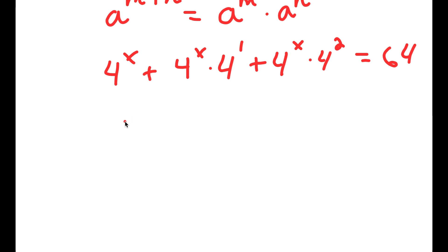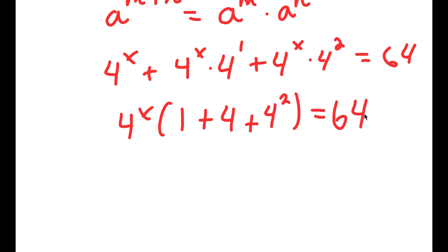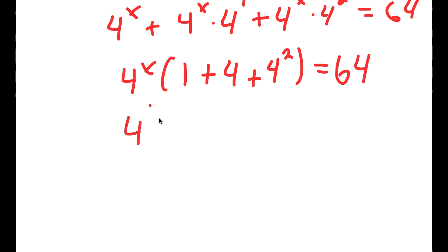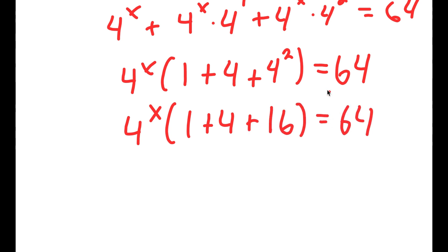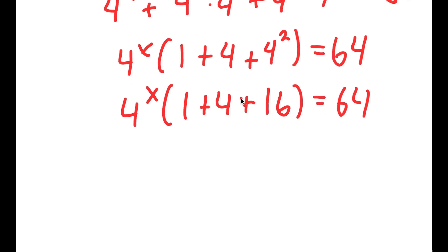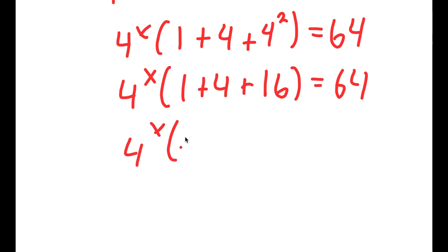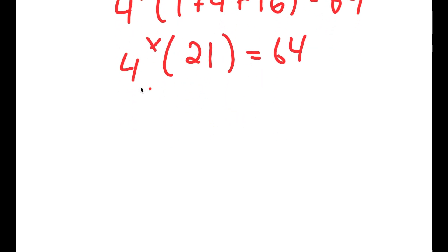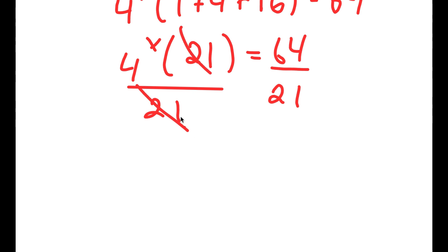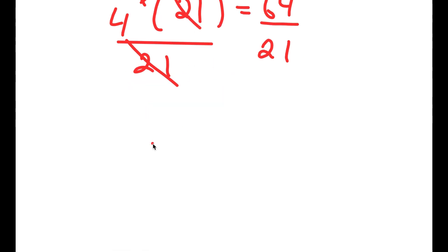From here, I'm going to factor out 4 to the power of x, giving me 4 to the power of x times 1 plus 4 plus 4 squared. And 4 squared is 16, so I get 4 to the power of x times 1 plus 4 plus 16. Now 1 plus 4 is 5, and 5 plus 16 is 21. So I get 4 to the power of x times 21 is equal to 64. Dividing both sides by 21, I get 4 to the power of x is equal to 64 over 21.